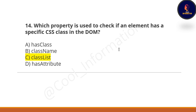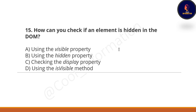Next question: How can we check if an element is hidden in the DOM? Option A: using the visible property. Option B: using the hidden property. Option C: checking the display property. Option D: using the isVisible method. The correct option is B — using the hidden property we can check if an element is hidden in the DOM.